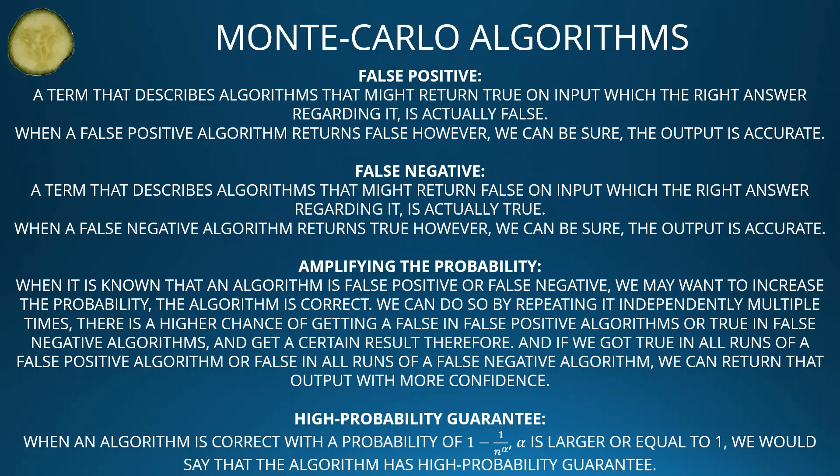When a false negative algorithm returns true, however, we can be sure the output is accurate. Amplifying the probability: when it is known that an algorithm is false positive or false negative, we may want to increase the probability that the algorithm is correct. We can do so by repeating it independently multiple times. There is a higher chance of getting a false in false positive algorithms, or true in false negative algorithms, and thereby getting a certain result. And if we get true in all runs of a false negative algorithm, we can return that output with more confidence.